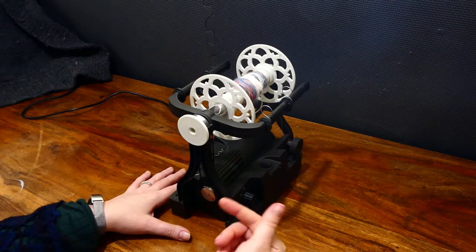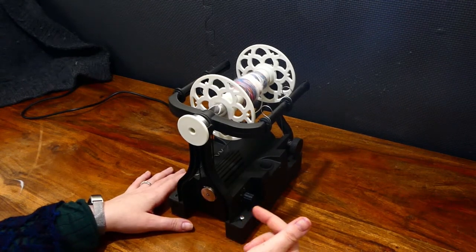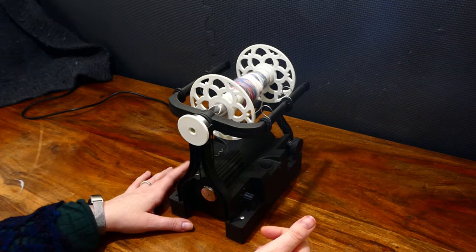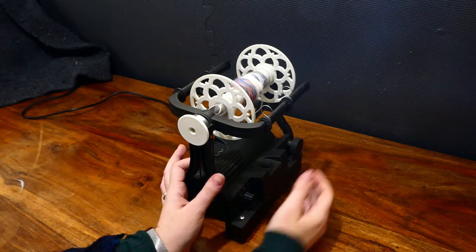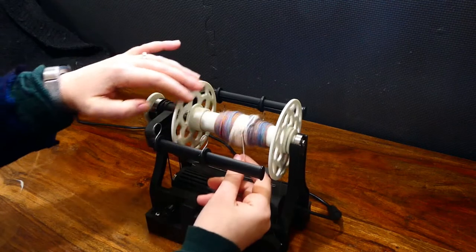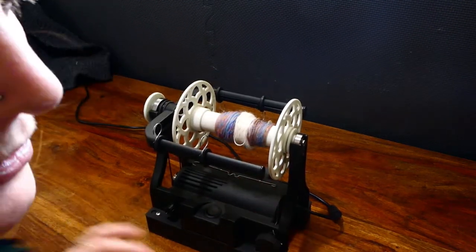What do you do if you have yarn at the front of the orifice and you're not getting any take up? Well, there's a few things to check. If you have a brand new empty bobbin on, check that your leader isn't slipping.